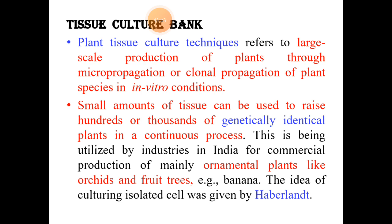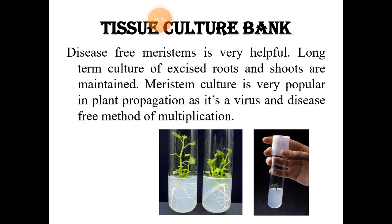The idea of culturing cells was given by Haberlandt, who tried this methodology to produce numerous genetically identical, disease-free plants. Meristems — the continuously dividing cells of the plant — were also used in plant propagation by taking root and shoot meristems.